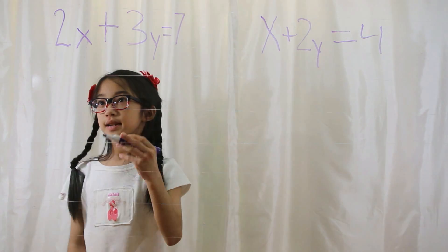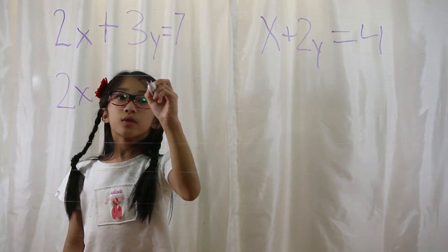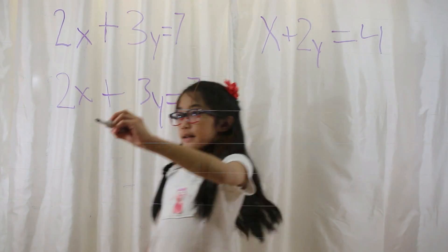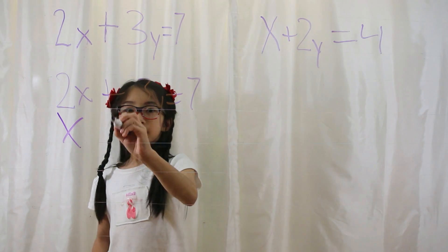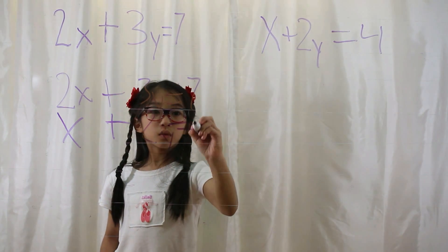First you copy that equation down. 2x plus 3y equals 7, and x plus 2y equals 4.